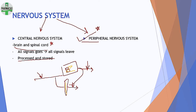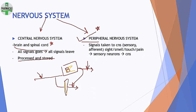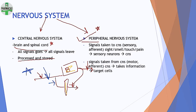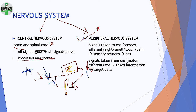Since our main topic is peripheral nervous system, it's important to know what is in it. First: signals taken to the CNS — these are called afferent (A comes first). Second: signals taken from the CNS going to target cells — these are called efferent (E comes after A in the alphabet).